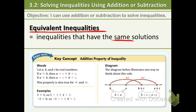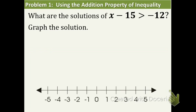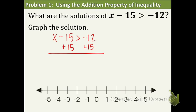We're going to first be focusing on addition, and this is actually very similar to what we've done with equations — you just add the same thing to both sides. In this first example, we have x minus 15 is greater than negative 12. We're going to add 15 to both sides, because we're isolating the x, getting it by itself. We have x on the left, and then we combine negative 12 plus 15, which is the same as 15 minus 12, and that's 3.